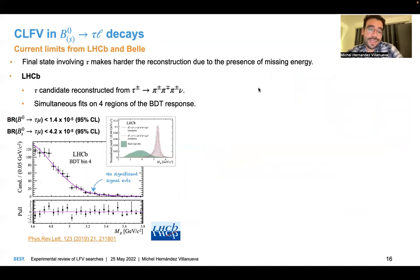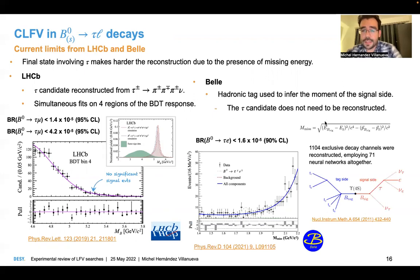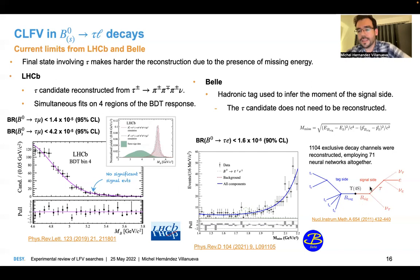Another possibility is to include a tau rather than an electron or muon. However, including the tau makes reconstruction much harder due to missing energy. LHCb reconstructs the tau from pions and performs simultaneous fits in control regions of the B decay. You combine with a lepton and search for an excess, but this is not observed, so LHCb puts a limit on the order of 10 to the minus 5. Belle also searched for this — using an electron instead of a muon as LHCb does — with the benefit of using the tag side as has been described in other conference talks. Once you recover this information on the tag side, you can use the signal side to search for new physics.